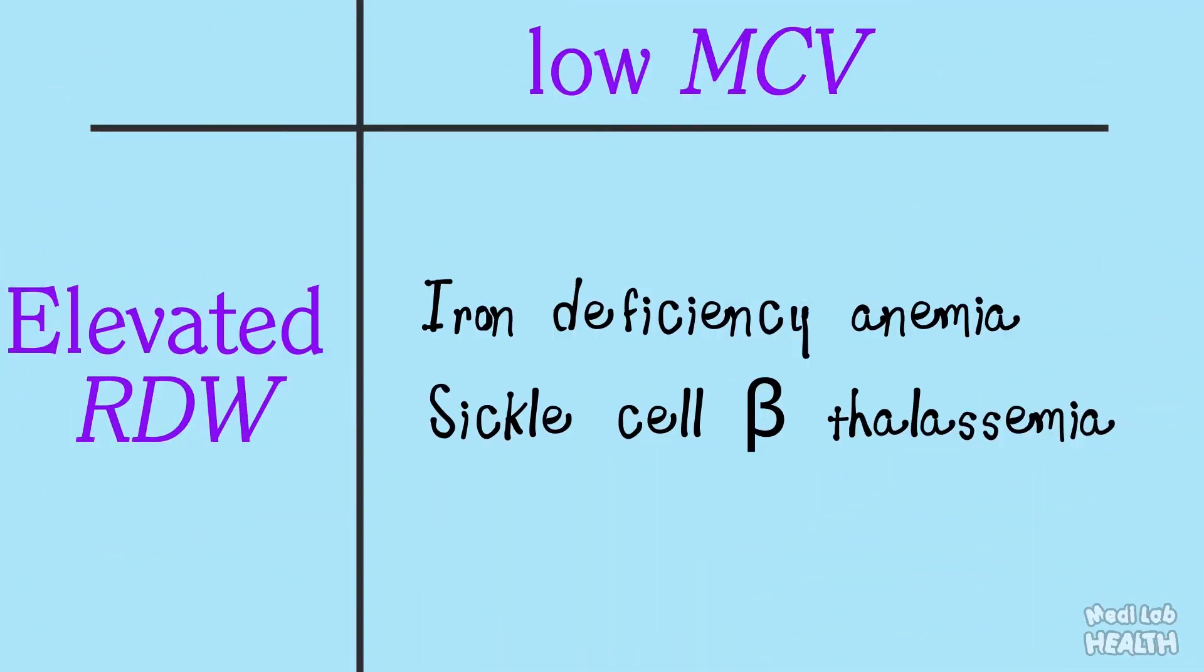Now in contrast, you can observe low MCV along with elevated red cell distribution width in iron deficiency anemia and sickle cell beta thalassemia.